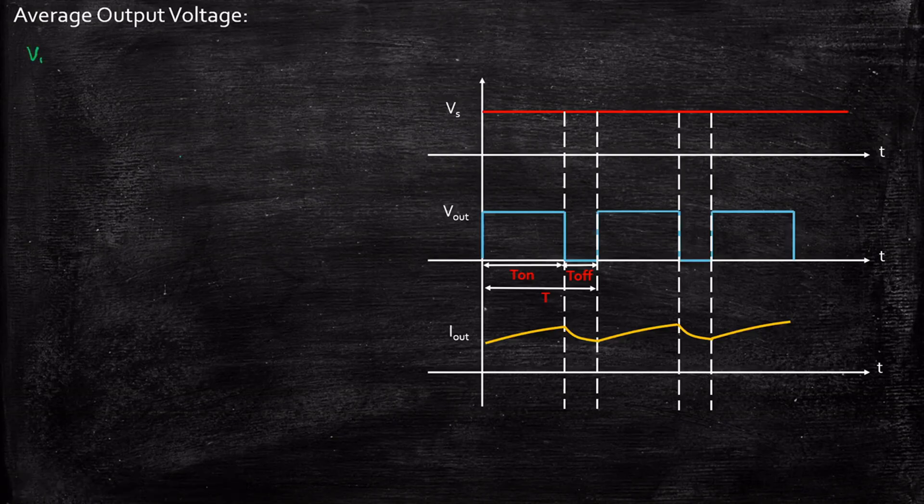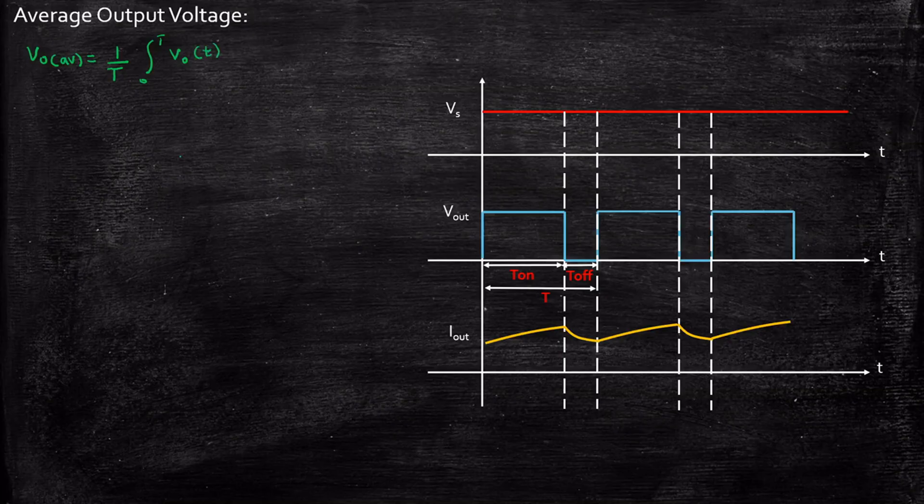Vout average. Fundamentally, by the definition, we know that it is 1 by time period, 0 to T, Vout of T, dT. Now, in this case, 1 by T, we are going to consider only till this point because the output voltage is anyway 0 from this cycle to this cycle. So, the limit is 0 to Ton, 0 to Ton.